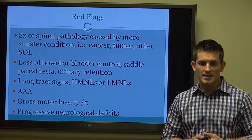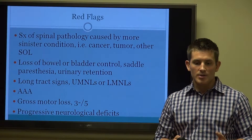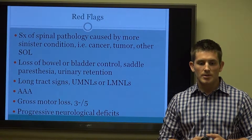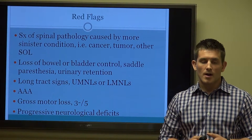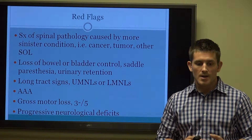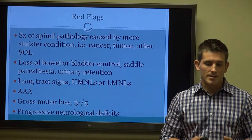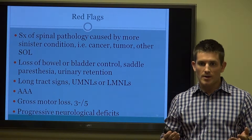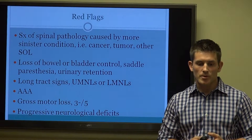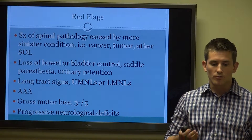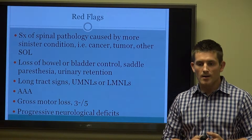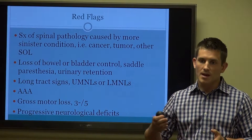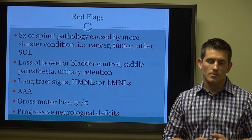Red flags include any symptoms of spinal pathology caused by more sinister conditions — cancer, tumor, or some other space-occupying lesion. We're looking for loss of bowel or bladder control, saddle paresthesia, or urinary retention. We want to check our long track signs, looking for upper or lower motor neuron lesions. History of AAA or presentation suggestible of AAA. Gross motor loss — we generally use the criteria of 3 over 5 in terms of strength — and progressive neurological deficits that are either outside our scope of practice or not responding to treatment.